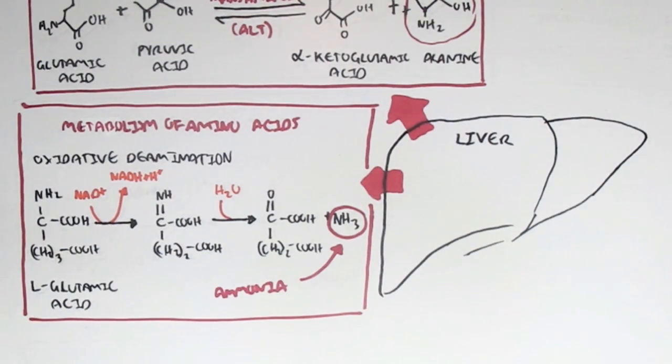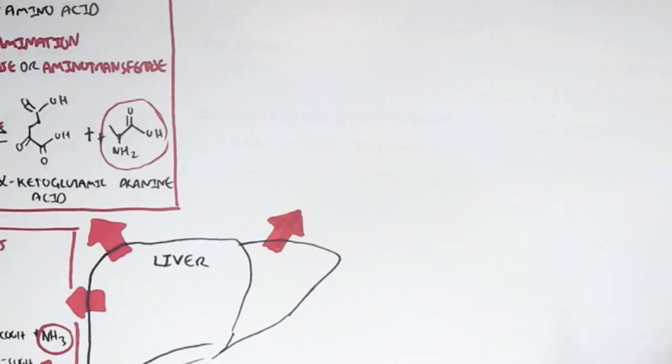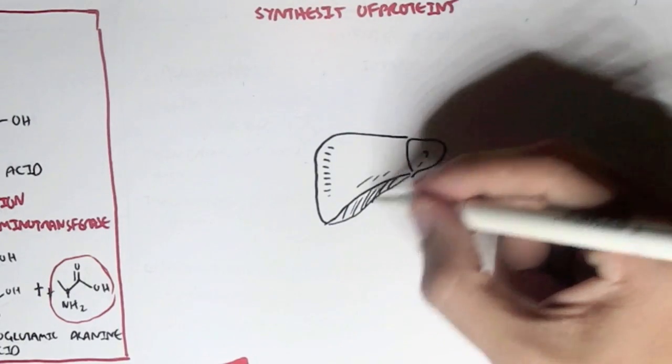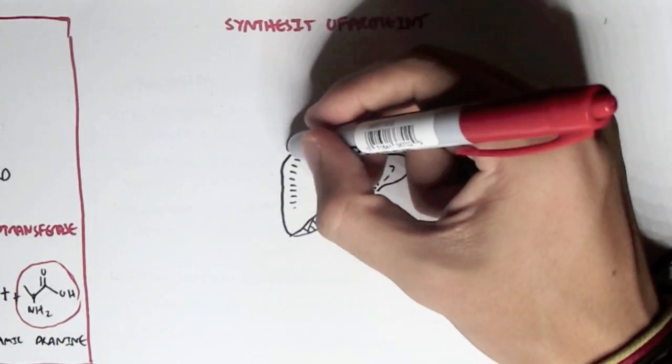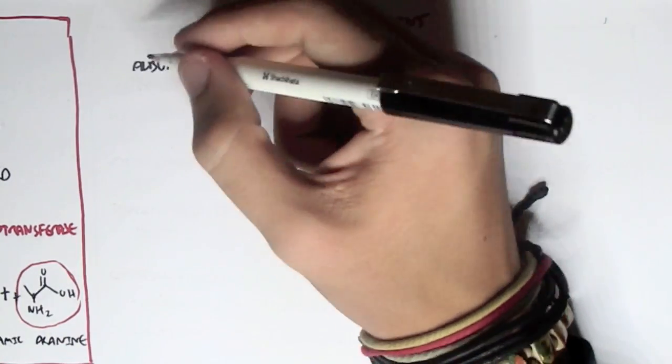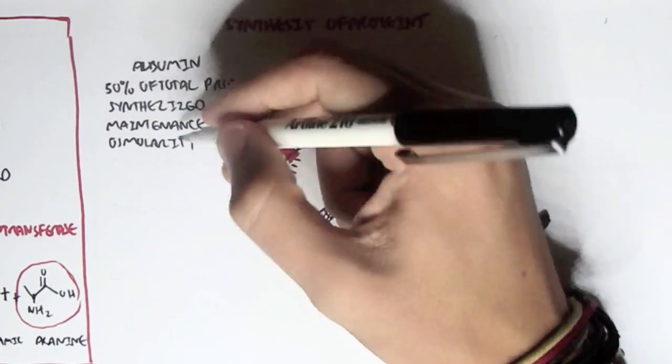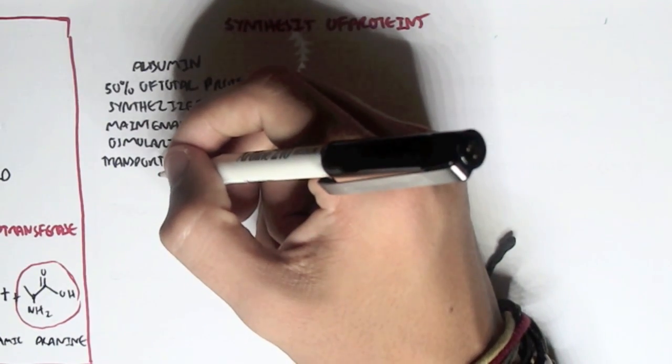Another function the liver possesses is that it can synthesize proteins. It can synthesize many, many proteins. One of the most important proteins is albumin. Actually, 50% of the total protein the liver synthesizes is albumin. Albumin helps in maintaining the osmolarity and also the transportation of various hormones.